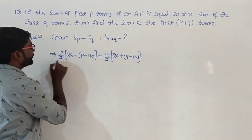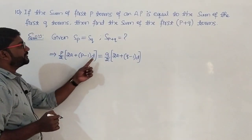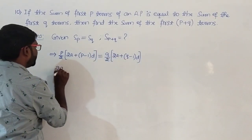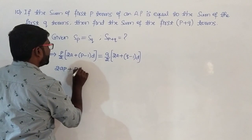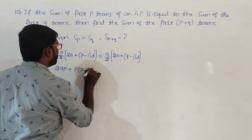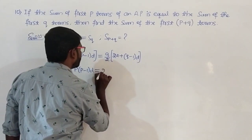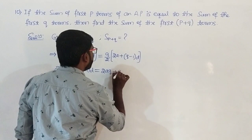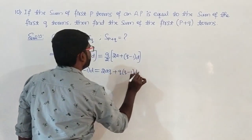The 2s cancel. Multiply p with the two terms and q with the two terms to get 2ap plus p times p minus 1 into d equals 2aq plus q times q minus 1 into d. Take these two terms to the left hand side.